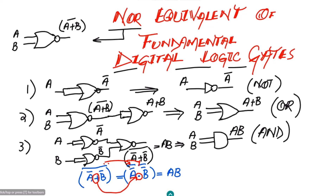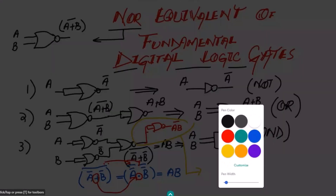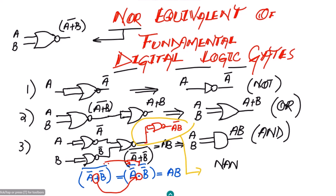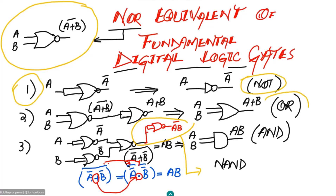If I want to make a NAND gate, I need to insert an inverter — let me use red color for it — so I will insert another NOR gate at the output of the AND configuration, giving me A·B complement. This addition turns the AND gate into a NAND gate. So the four gates — NOT, OR, AND, and NAND — are all constructed using NOR gates.